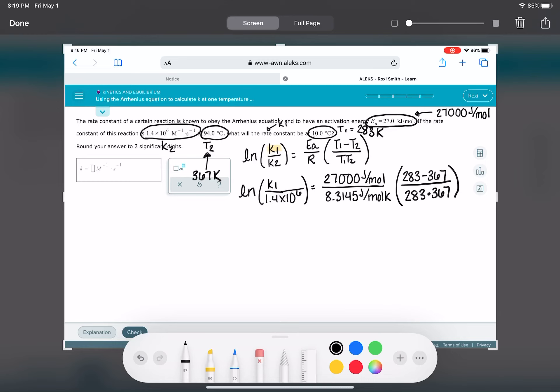So see, this math equation is actually going to be pretty brutal. I want to just try to work the right side out, and I'm going to start here with this stuff because that's going to be a really big number. 283 minus 367 divided by 283 times 367, and then multiply that by 27,000, and divide by 8.3145. So we get negative 2.626.